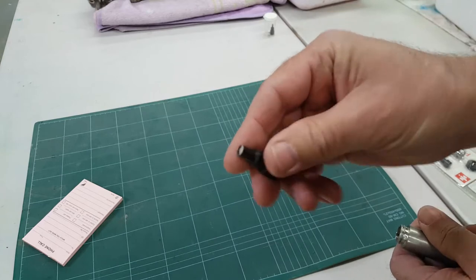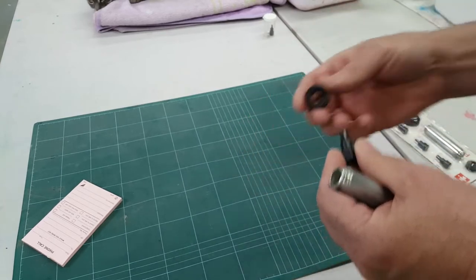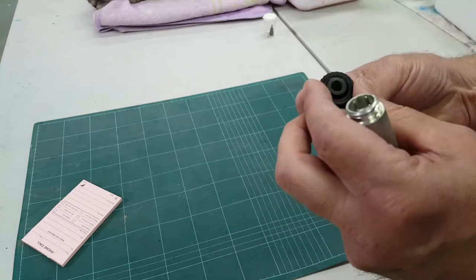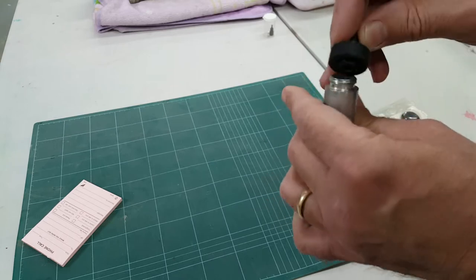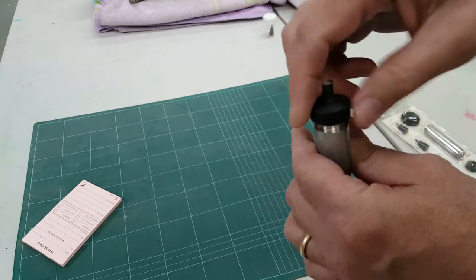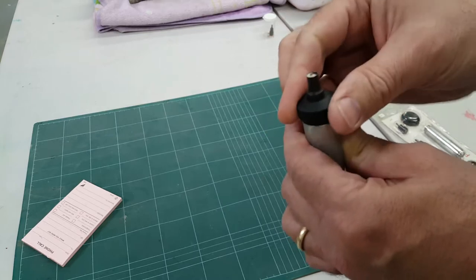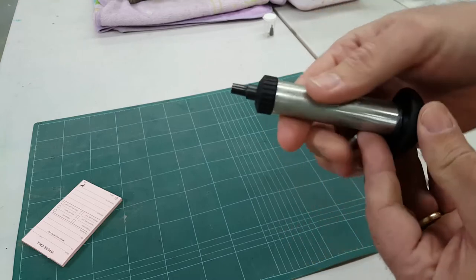And then you take the bit that's your choice, what size of hole you want to make, and the bit cap. And this fits loosely. There's a hexagon opening in here that stops the bit from turning. And that's how you assemble it.